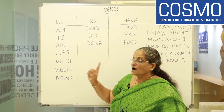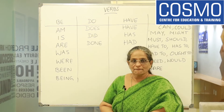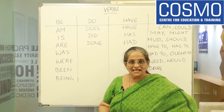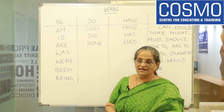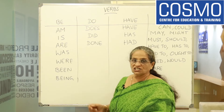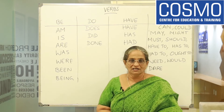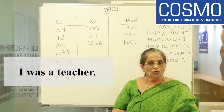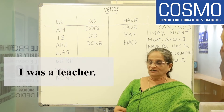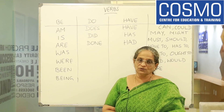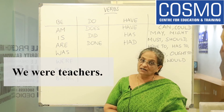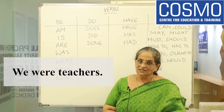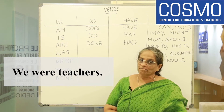Now we come to the past. Past forms of BE are WAS and WERE. 'I was a teacher' — if I am not a teacher now, I was a teacher. And if it is plural, we use WERE: 'We were teachers.'